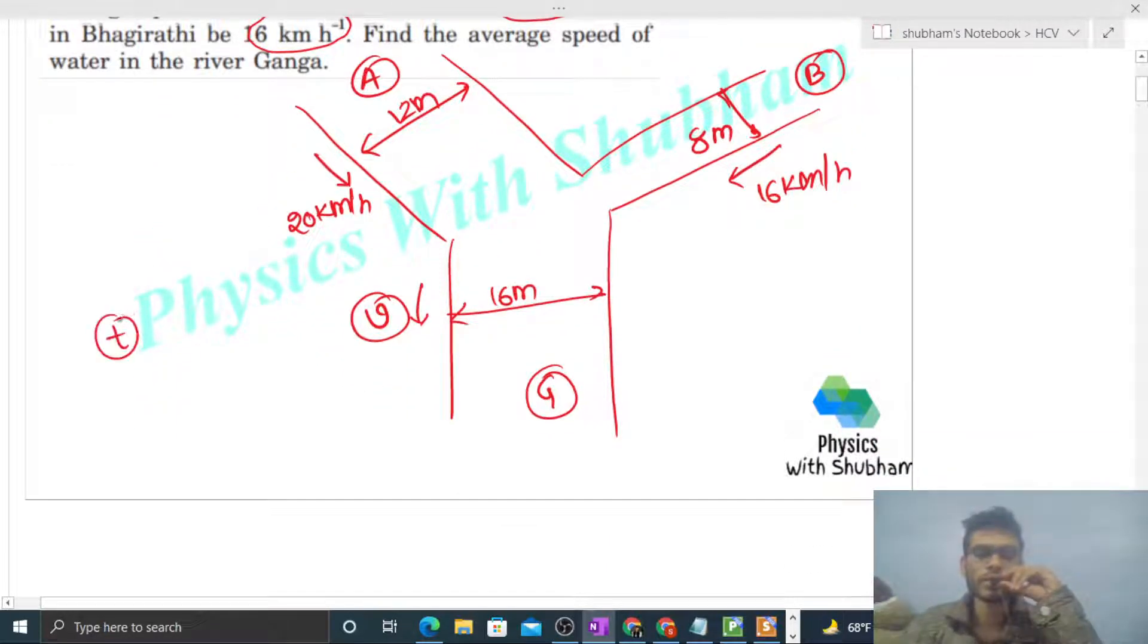At some time instant, in a time interval t, the mass of water passing through Alaknanda is m1, the mass of water passing through Bhagirathi is m2, and the mass of water passing through Ganga is m3. Then equation of continuity says that m3 equals m1 plus m2.